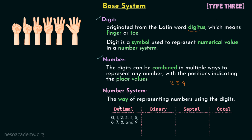Let us start with the decimal number system. In this system, we have 10 different symbols or digits: 0, 1, 2, 3, 4, 5, 6, 7, 8, and 9. Since we have 10 different digits, the base or radix of the decimal number system is equal to 10.